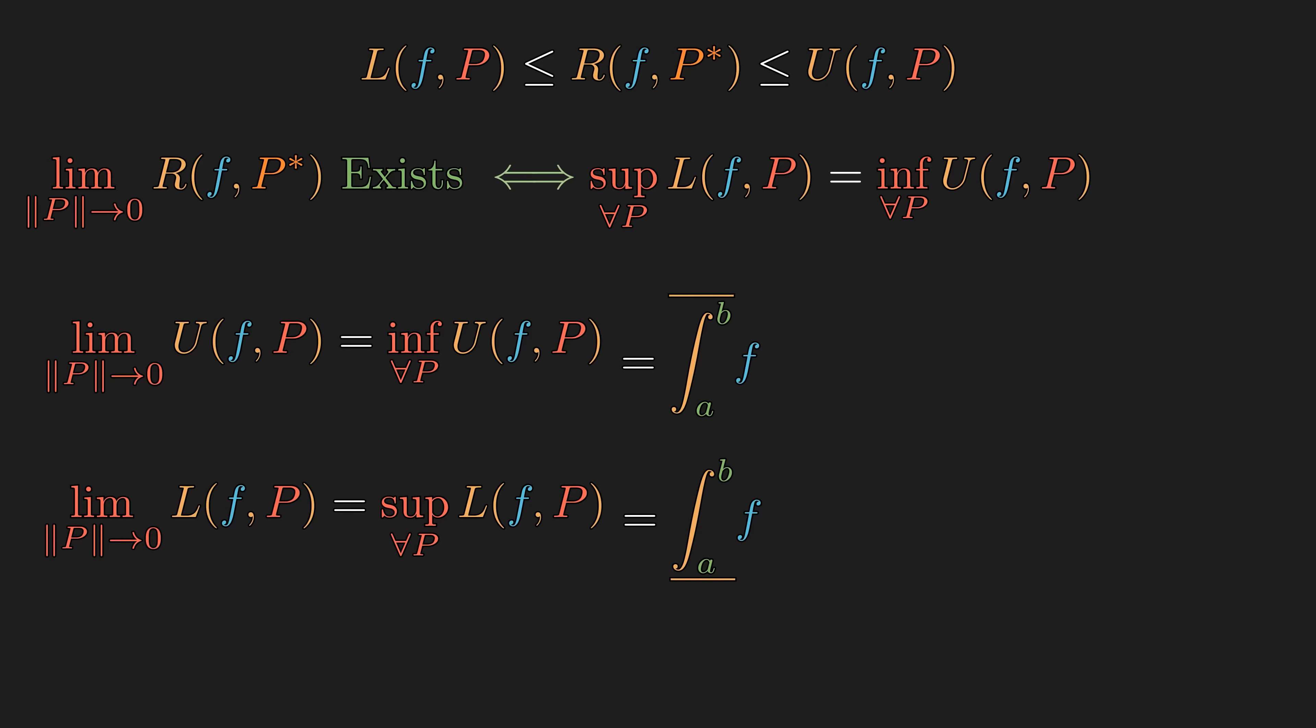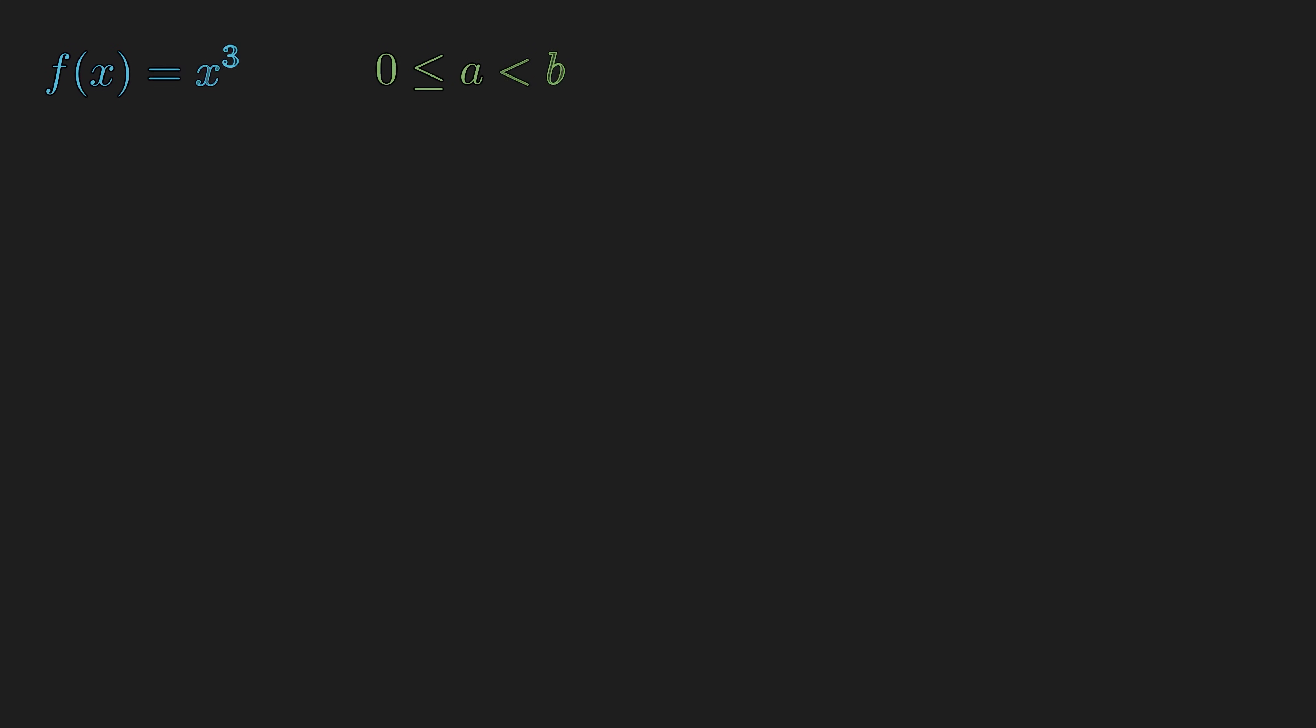The first question we should ask is, how much better is this new definition? Let's try slaying the same monster with our new blade. First, let's define a family of partitions P_n to be n equal size partitions, just like how we do it in elementary calculus. Then, the upper sum of P_n is exactly the same as the right sum, since the function is always increasing.